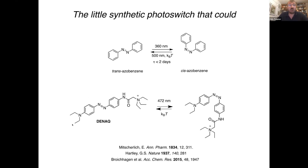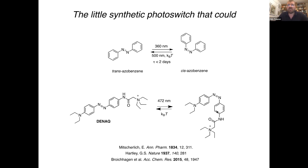It turns out that this molecule is a blocker of an ion channel — the famous potassium channel — which is important for neuronal activity in the trans form. It is actually a photo-switchable version of lidocaine. When you go to a dentist, you get an injection of lidocaine to numb your nerves. This molecule in the stretched trans form indeed numbs the nerve because it blocks potassium and also sodium channels. Whereas if you bend it to the cis form, it does not block and therefore allows neuronal activity to happen.